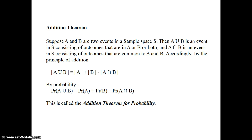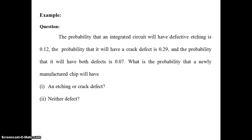That is, we are finding all possible outcomes of A added with all possible outcomes of B, minus the common outcomes in both A and B. This is called the Addition Theorem for Probability. Now let's take one example.